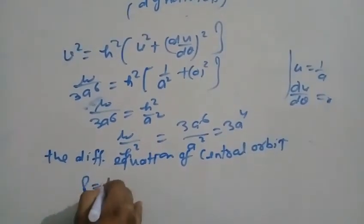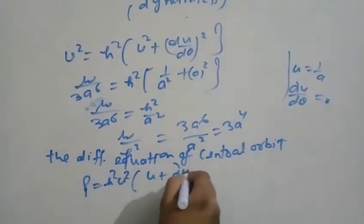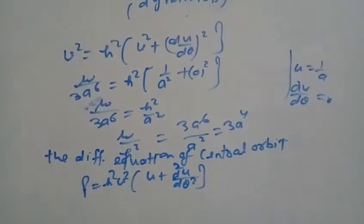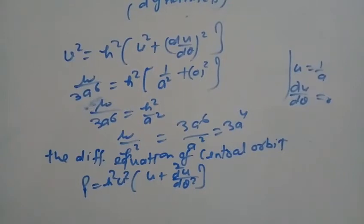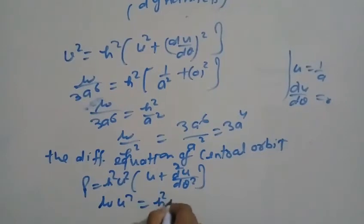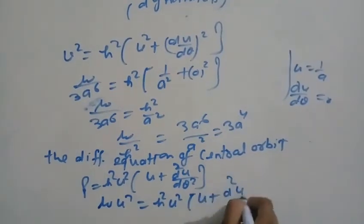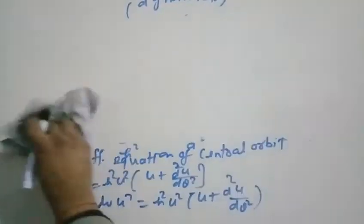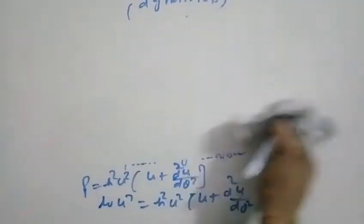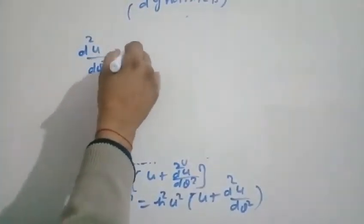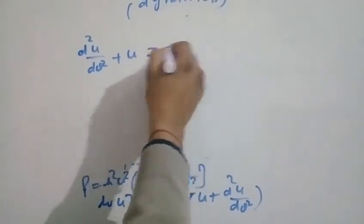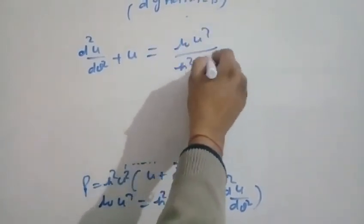The differential equation of the central orbit is: P = h²u²[u + d²u/dθ²]. Substituting the force P = μu⁷: μu⁷ = h²u²[u + d²u/dθ²]. Dividing both sides by h²u²: d²u/dθ² + u = μu⁵/h².